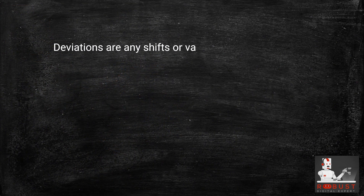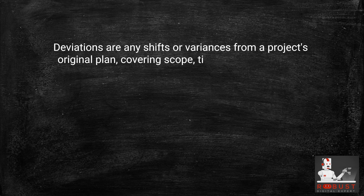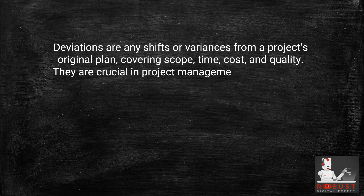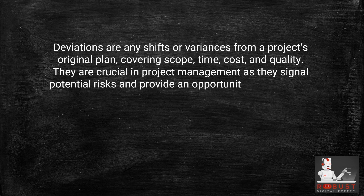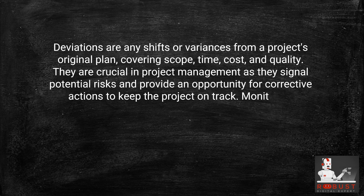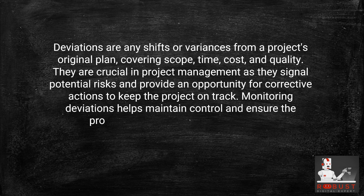In Summary: Deviations are any shifts or variances from a project's original plan, covering scope, time, cost, and quality. They are crucial in project management as they signal potential risks and provide an opportunity for corrective actions to keep the project on track. Monitoring deviations helps maintain control and ensure the project's objectives are met efficiently.